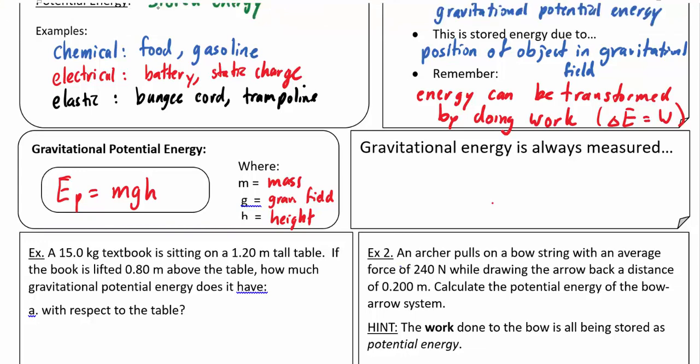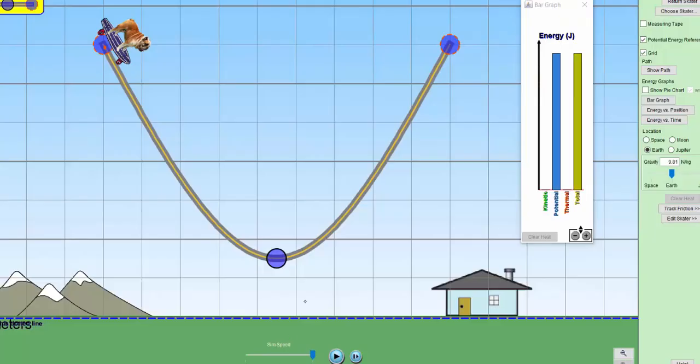Gravitational potential energy is always measured relative to some reference point. Let me give you a quick example of that.